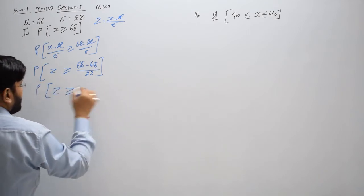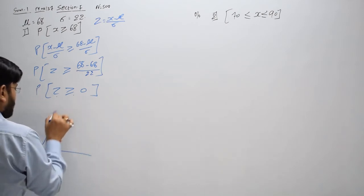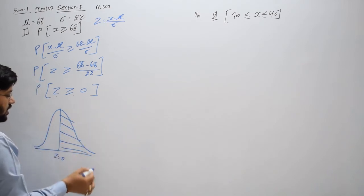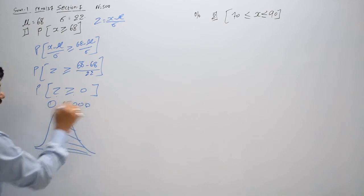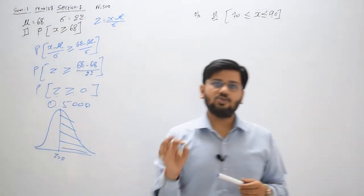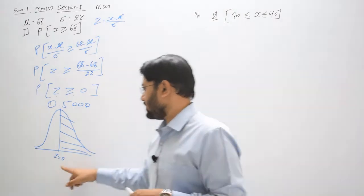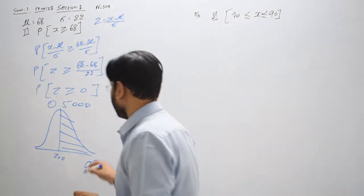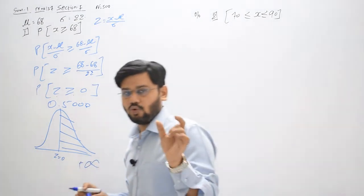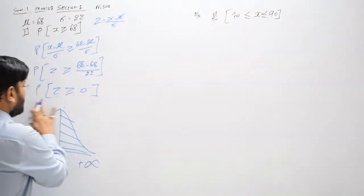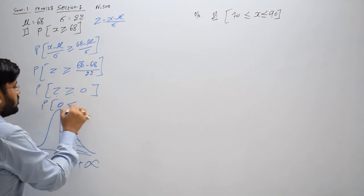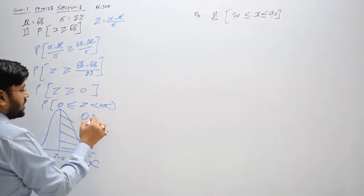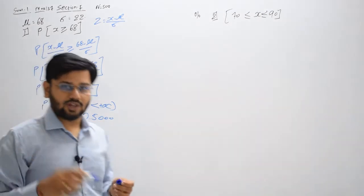Toh Z greater than 0 aata hai. Normal distribution draw ki, yahaan 0 likha, aur greater than 0 ka matlab hai right-hand side portion — plus infinity ki taraf jaata hai. Isliye probability = 0.5 aayegi. Bachcha, 0 se greater portion right-hand side hota hai — yeh point ध्यान mein rakhna. Toh answer P(X ≥ 68) = 0.5. Pehla sum khatam hua.